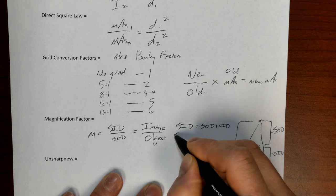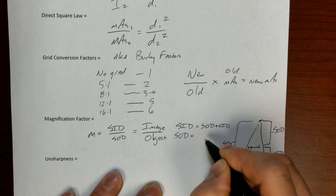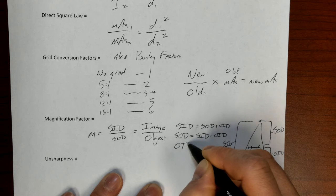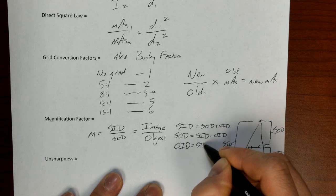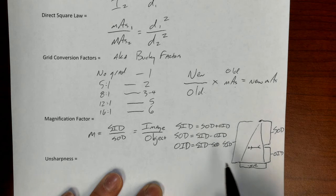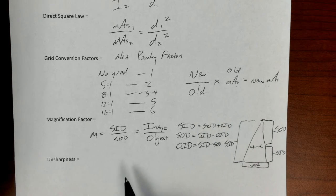So we can further see that SOD, if we want to figure out what the SOD is, we need to take the SID and subtract out the OID. If we want to figure out what the OID is, we need to take the SID again and subtract out the SOD. This will be helpful for us, particularly when we're looking at things like unsharpness.